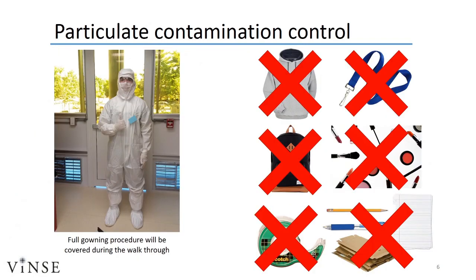To avoid contaminating the space, users wear clean room garments that contain their environment and debris. This gowning procedure, which will be covered in the facility walkthrough, includes a hairnet and face mask, a hood, coveralls that extend from the neck to the ankles and wrists, two pairs of shoe coverings, two pairs of gloves, and safety goggles. To avoid separation between the hood and the coverall, hooded sweatshirts are not to be worn in the clean room. External items, such as lanyards and backpacks, are not permitted in the clean room, nor is excessive makeup or fragrances such as perfume or cologne, as these will generate further particulate matter.